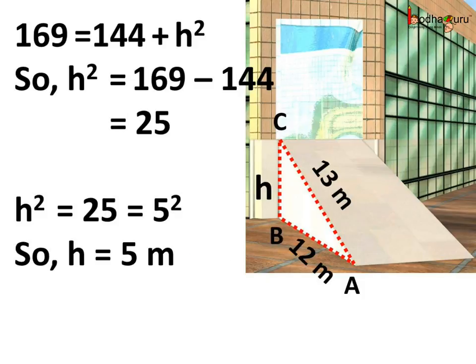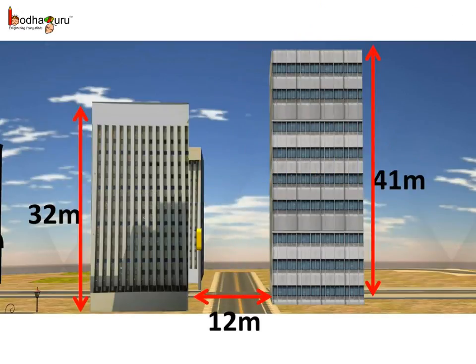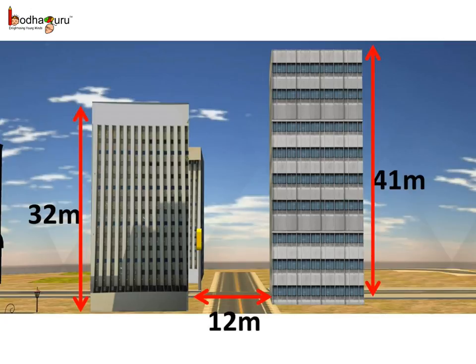And thus, using the Pythagoras theorem, we found the height of this slanting plane. Let us take another example. Here the distance between two buildings is 12 meters. One building is 41 meters tall and the other is 32 meters tall. Aman went to the roof of the shorter building and wondered what was the distance between the tops of the two buildings.